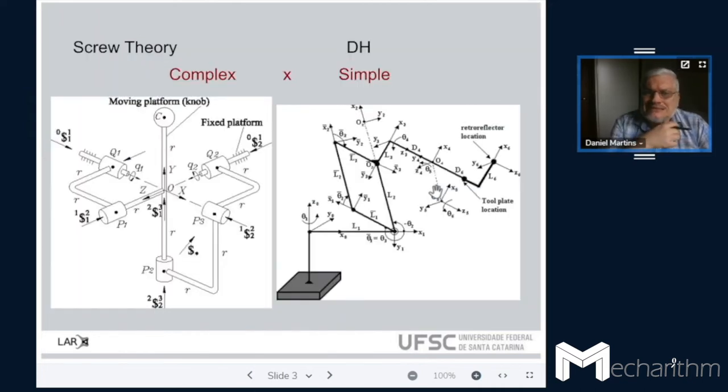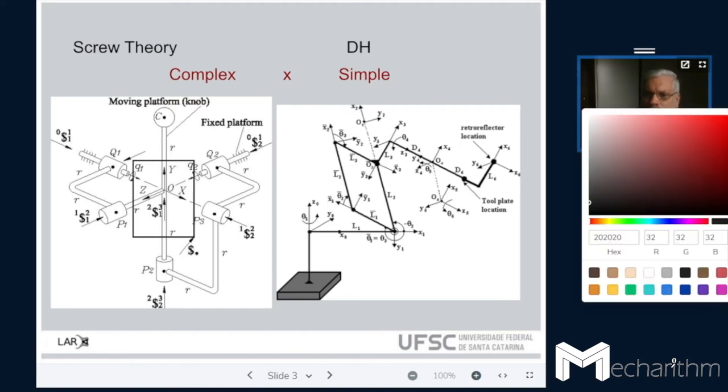Well, the screw theory and other types of representations, we can say that there is some complexity and some simplicity inside. On the left side you have here a robot, a special robot with some kind of complexity, but whenever you use screw theory you have here a single reference frame. So we have in this case one reference frame only.